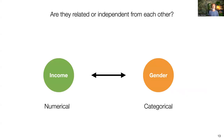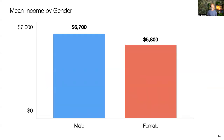In other words, we want to make sure whatever difference we're looking at between two variables is something we should pay more attention to, or maybe it's not that important and we should move on. For example, with employee data we have income (numerical) and gender (categorical). If you draw a bar chart showing mean income by gender — male at $6,700 and female at $5,800 — we want to evaluate if this $900 difference is significant.